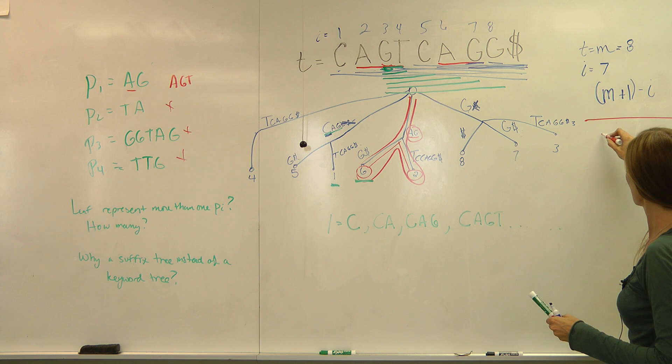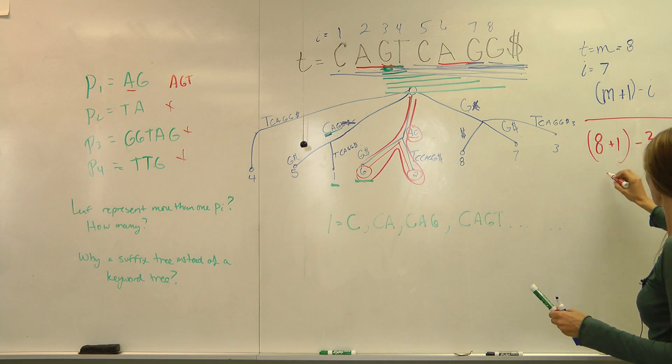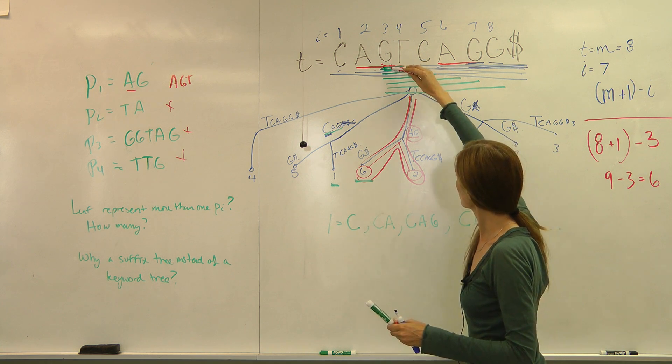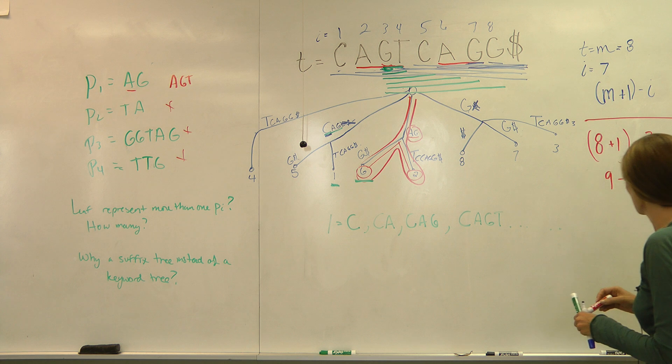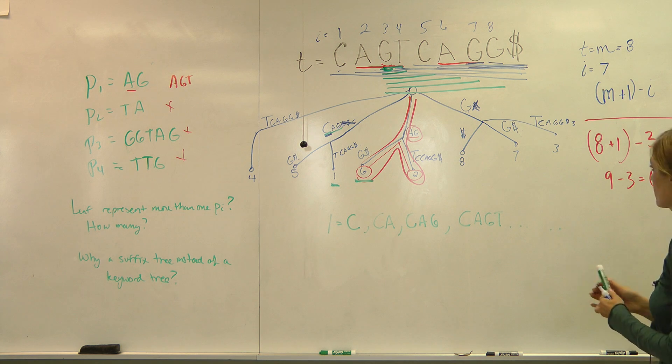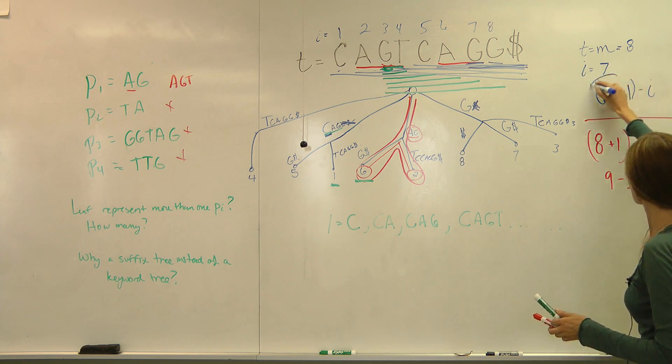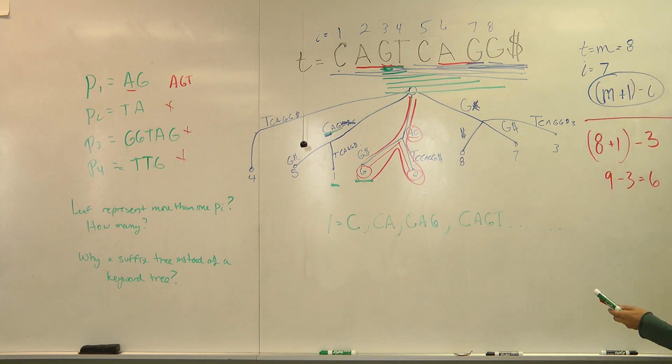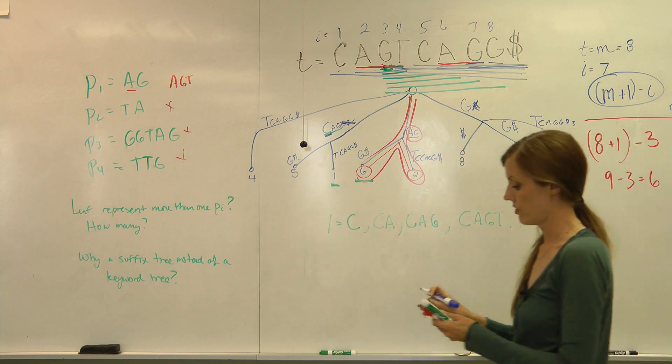So that would be our M is eight plus one minus our index of three. Nine minus three equals six. One, two, three, four, five, six. So the answer to how many patterns can a leaf represent? It's this. When I represents the index at that leaf. And M represents the length of your text.